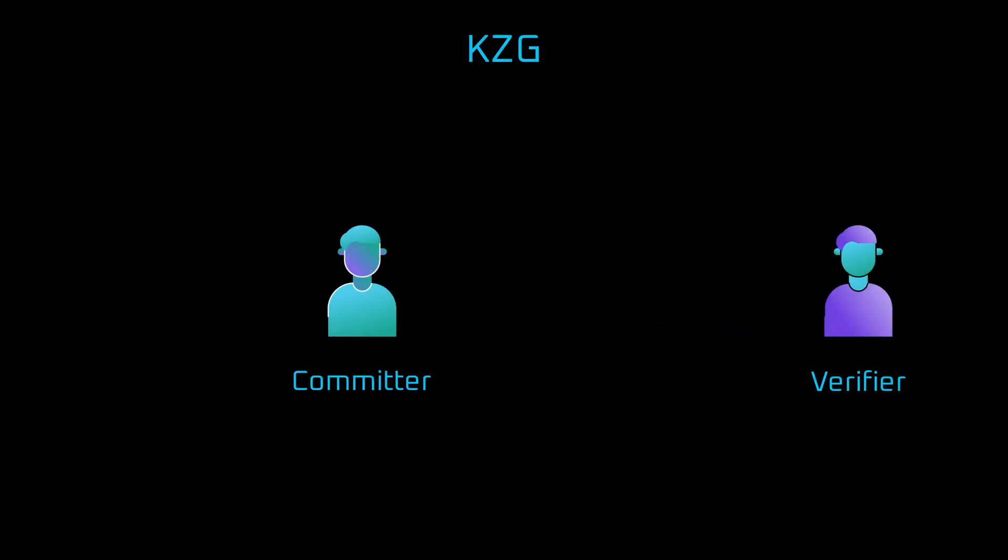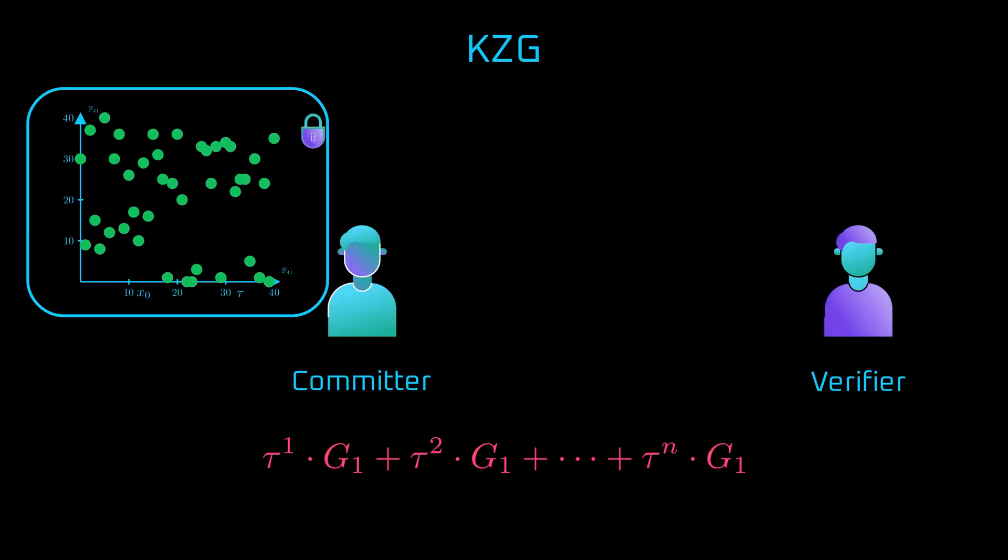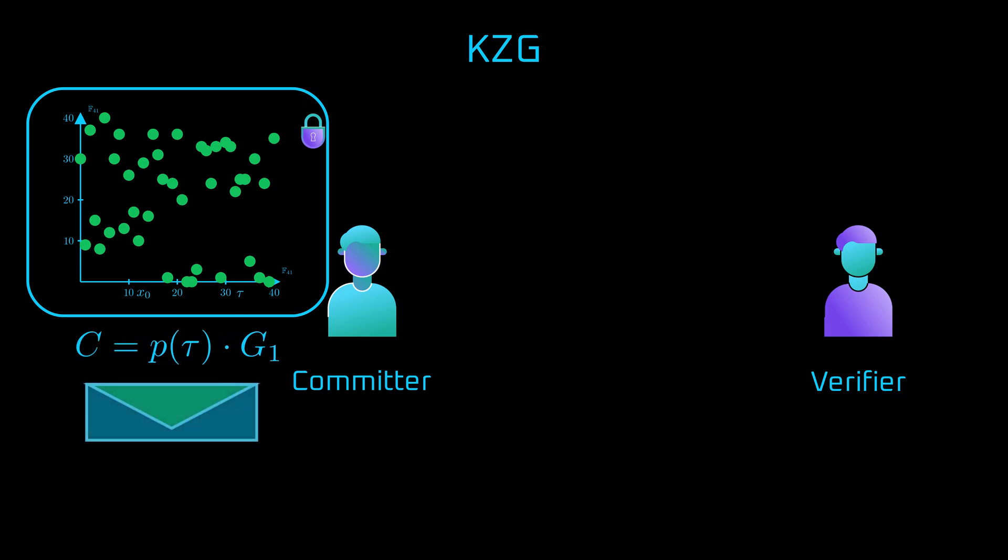Let's see how it works in the case of the KZG commitment scheme. Using the trusted setup, the committer calculates the encrypted value of the polynomial at tau. This elliptic curve point is a commitment, which the committer sends to the verifier.